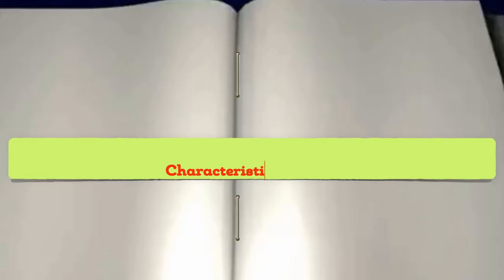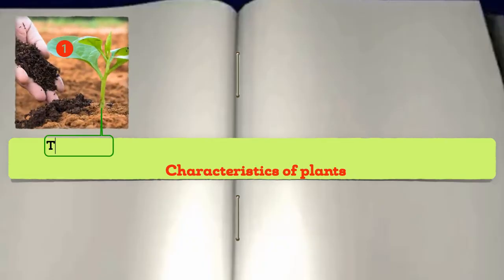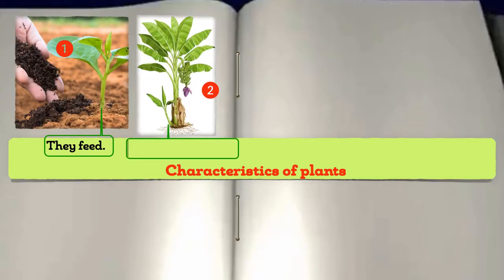Dear learner, did you get it right? I am certain that you did. Well done. Can you remember what the question was? You were to find out where the plants are living things. What have you discovered? The answer is yes, they are. Plants are living things.